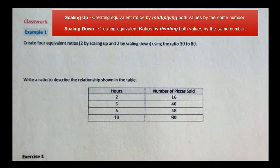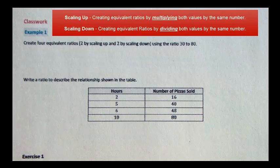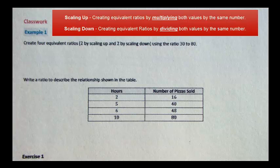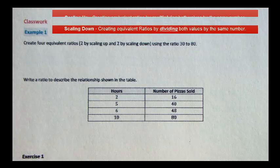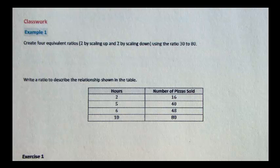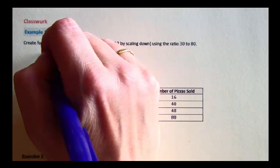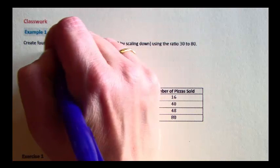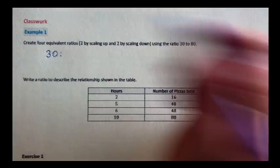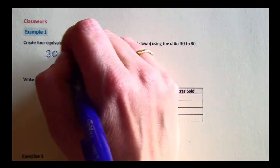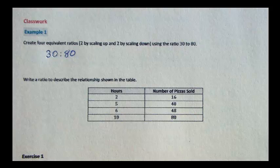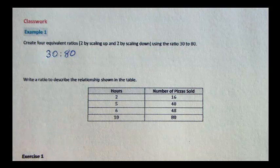You can think about it like doing fractions. If we wanted to make equivalent fractions that were smaller, we'd divide both numbers by the same thing. If we wanted to make equivalent fractions that were larger, we'd multiply both numbers by the same thing. So let's give it a try. Let's start by writing the ratio: 30 to 80.